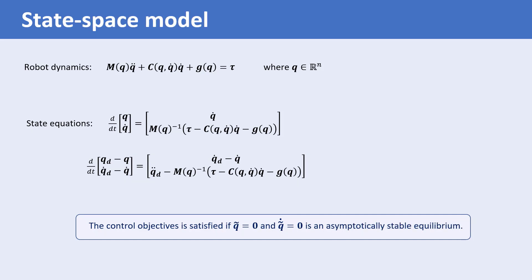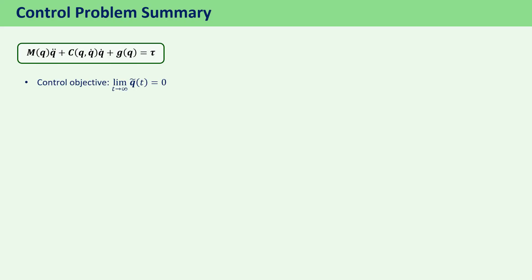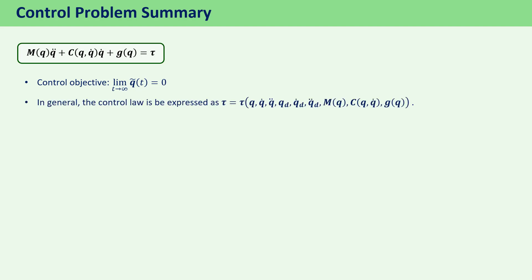In summary, in the problem of robot manipulator control, we aim to find the vector tau such that the limit of Q-tilde of T as T goes to infinity equals zero. In general, the control law can be a function of Q and its derivatives, Q-tilde and its derivatives, and the matrices M of Q, C of Q and Q-dot, and the vector G of Q.